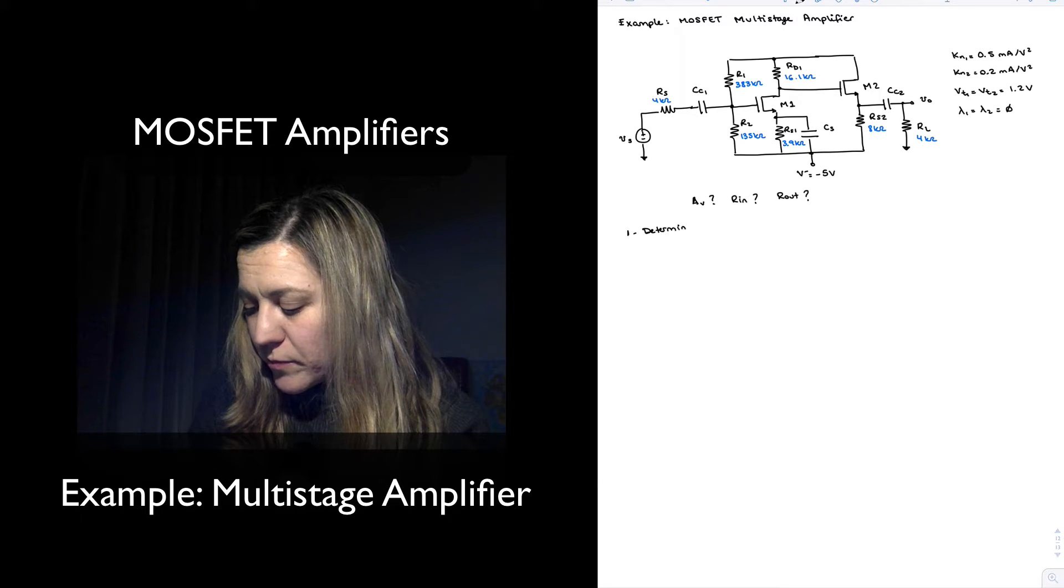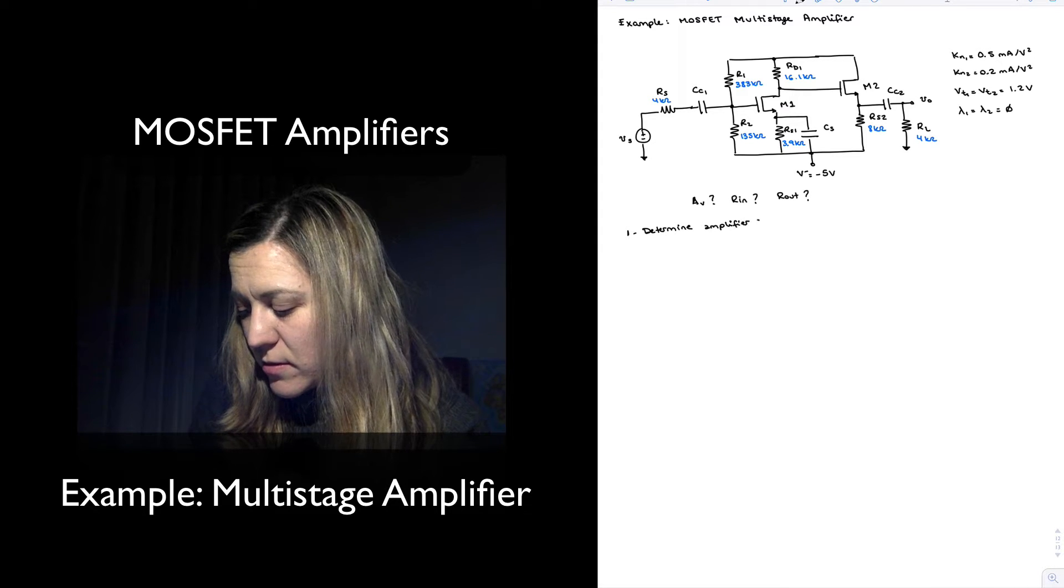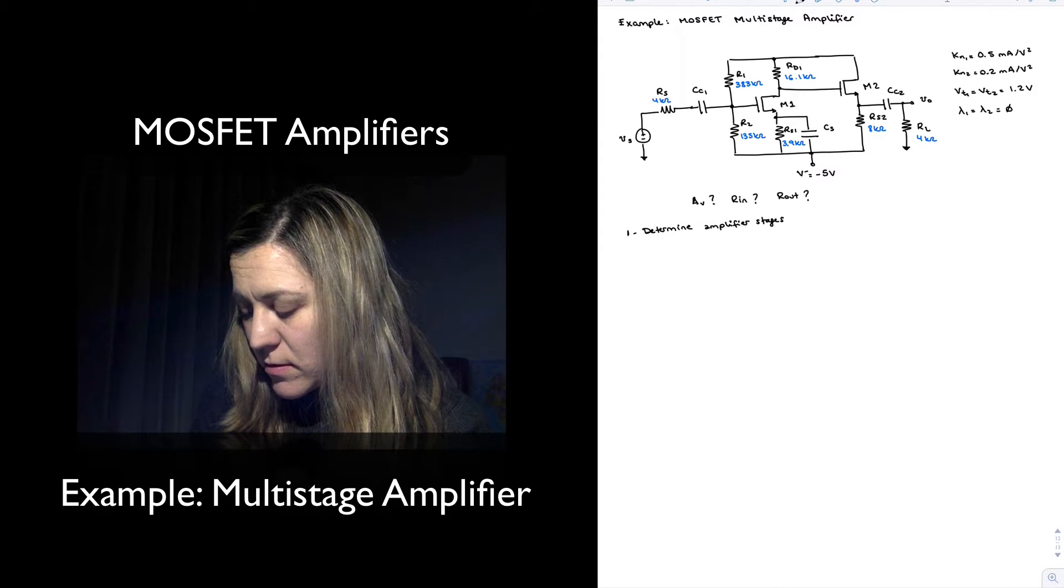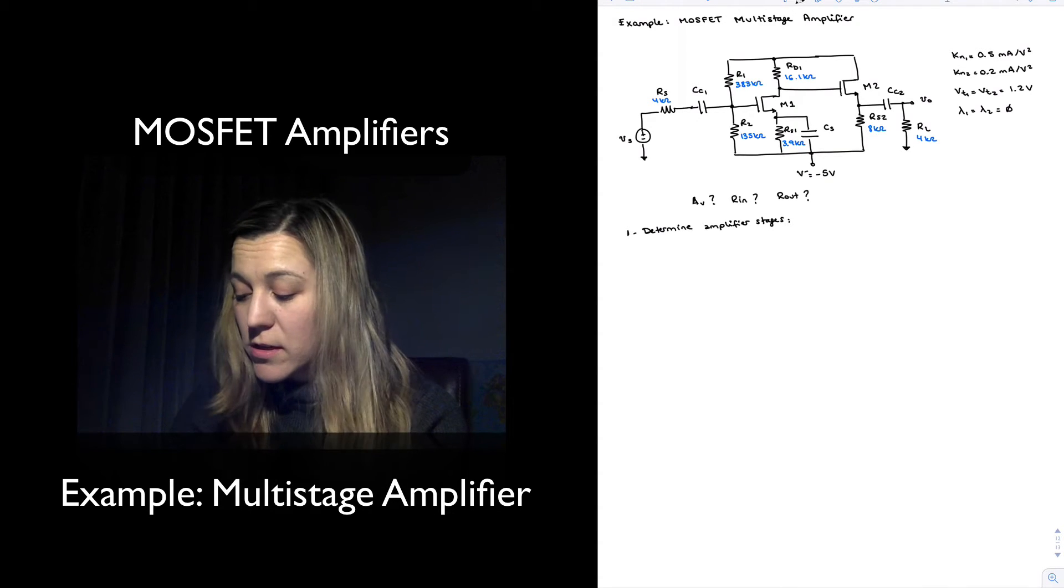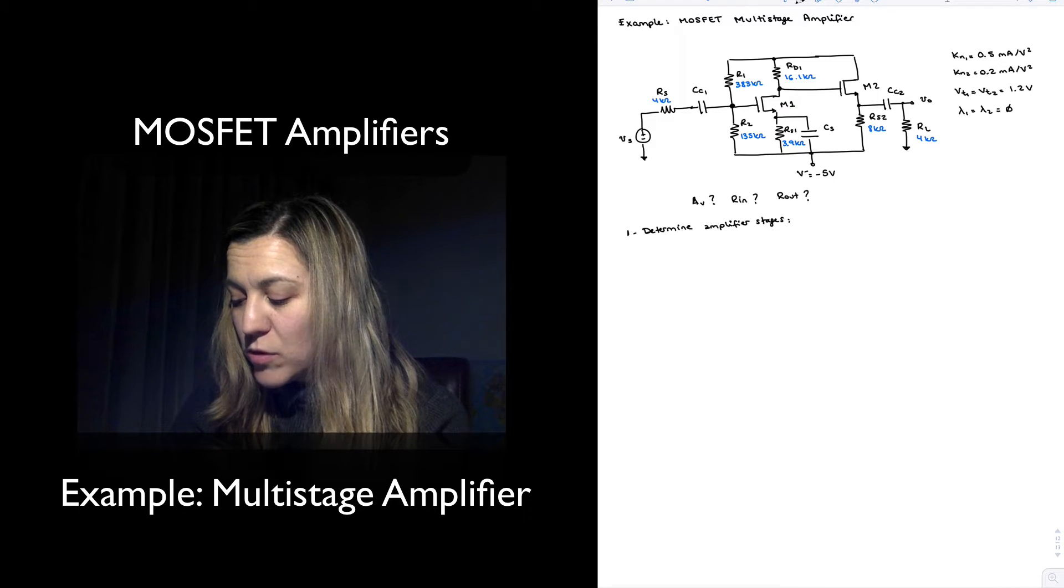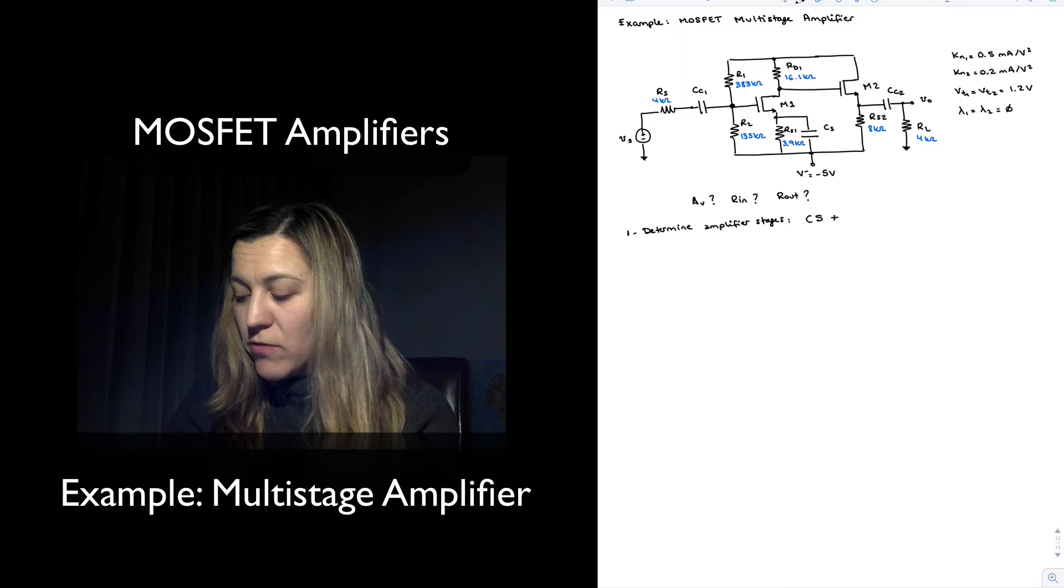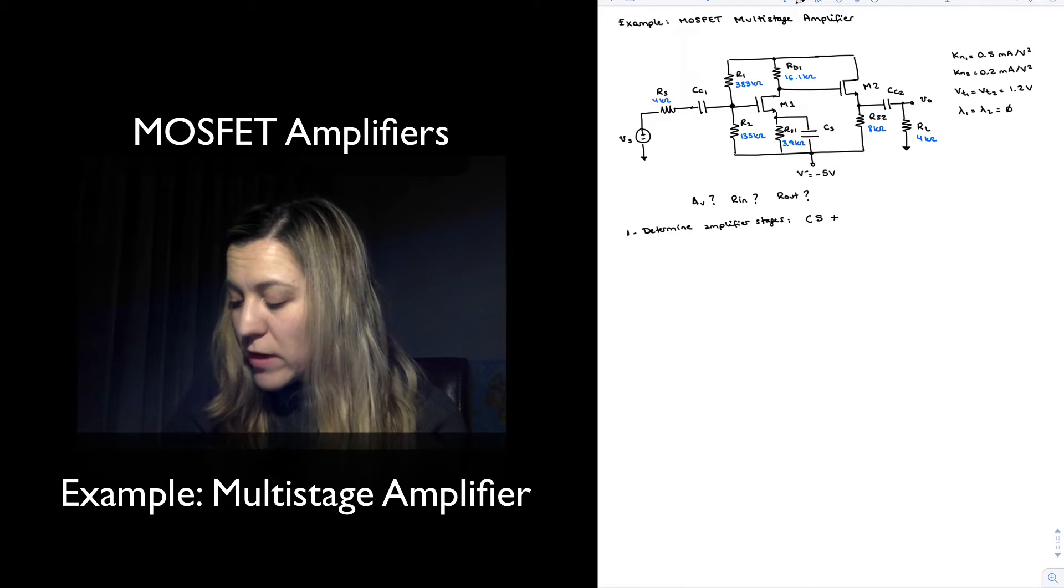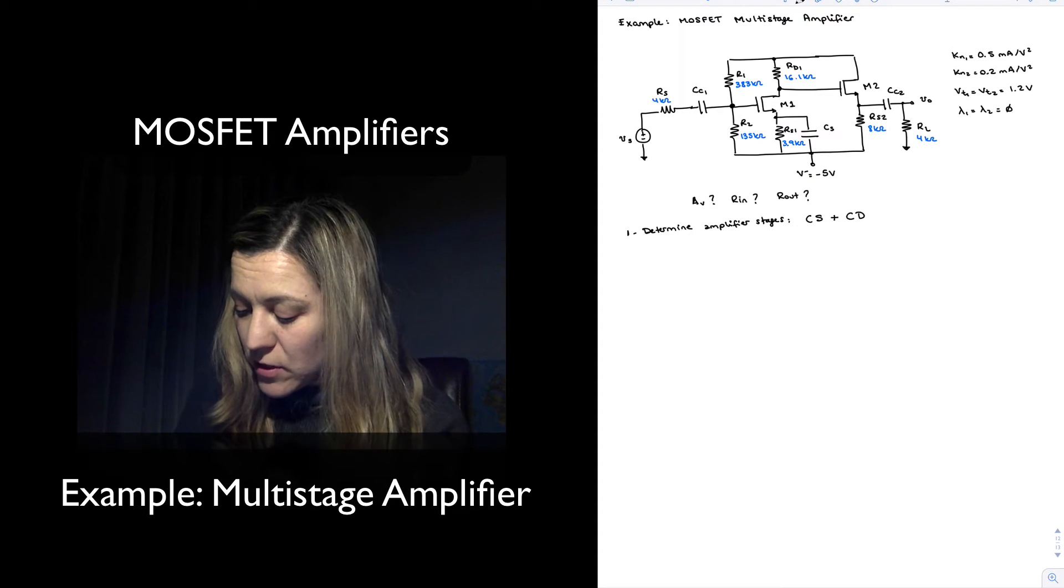First, determine amplifier stages. The first one is a common source because the input signal is applied to the gate and the output is taken out of the drain. This is a common source followed by a common drain or source follower. Those will be the two stages.